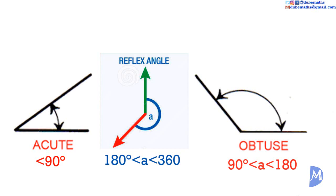An obtuse angle is an angle greater than 90 degrees but less than 180 degrees. An angle greater than 180 degrees is referred to as a reflex angle.